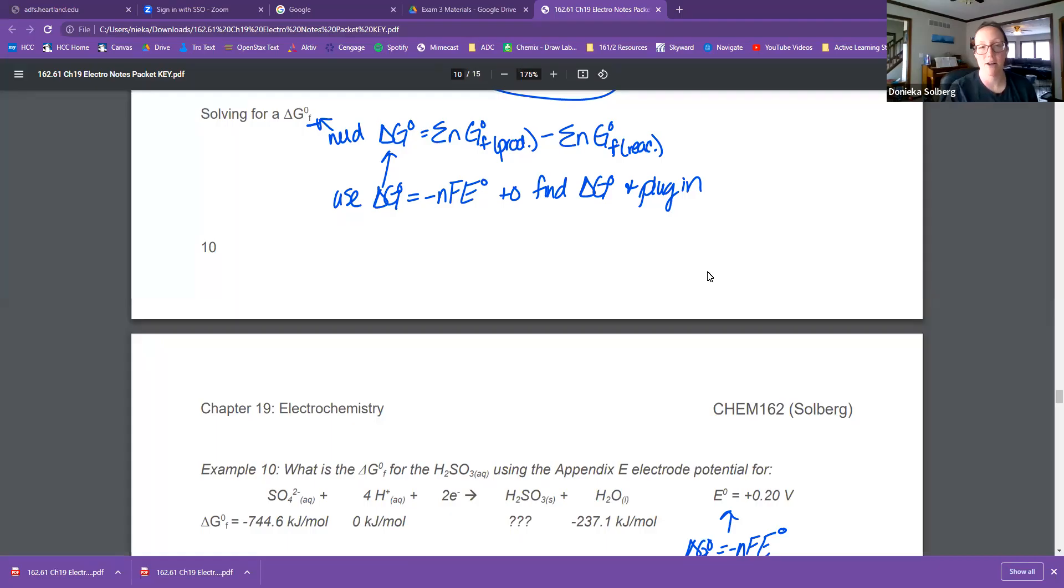Okay, this is like a quick little side note example. Essentially, since delta G and all of the things and delta E and K are all related, another type of problem I could give you is if I had a cell, so a voltaic or a galvanic cell, and I wanted to find the delta G formation of something.